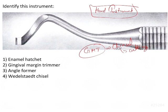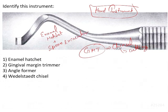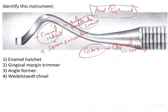The GMT is essentially a fusion of the enamel hatchet and the spoon excavator. It looks like an enamel hatchet, but its blade is curved — that curved blade feature comes from the spoon excavator. So if you see an instrument that looks like a hatchet but has a curved blade, that curvature is what identifies it as a GMT.